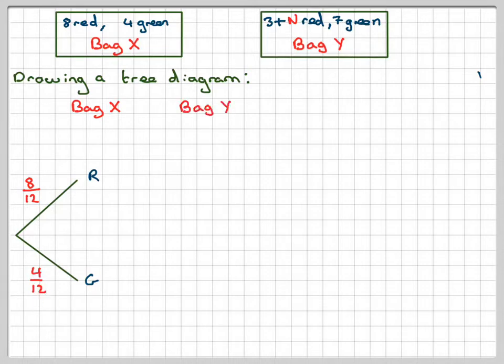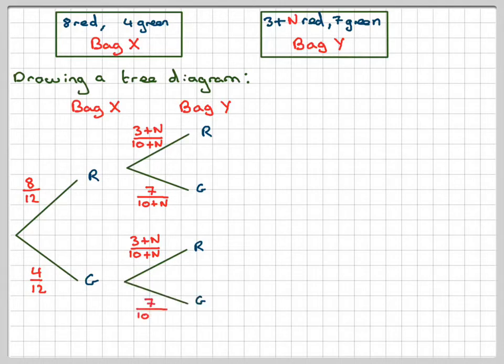Now bag Y is a little bit more interesting. In bag Y we can have a red. The probability of getting a red is 3 plus N. And then altogether there was 10 altogether. Then we've added N, so it would be 10 plus N for the denominator. And then the probability of getting a green will be 7 out of 10 plus N. In the second case, exactly the same. 3 plus N over 10 plus N will be getting a red, and 7 out of 10 plus N will be getting a green.